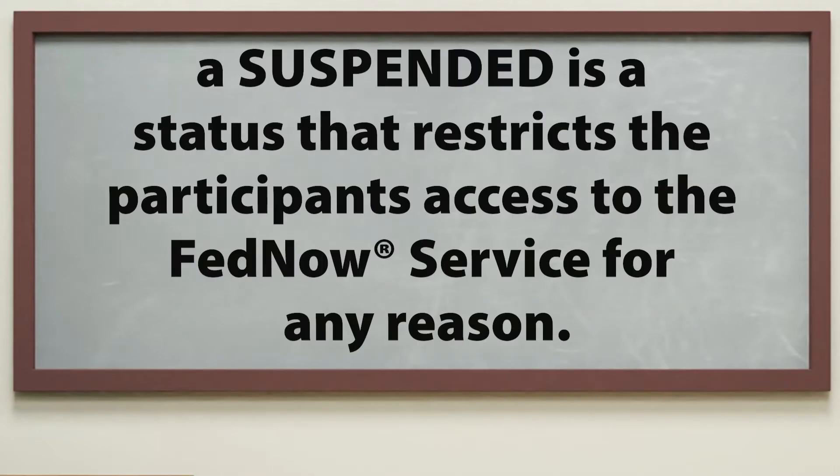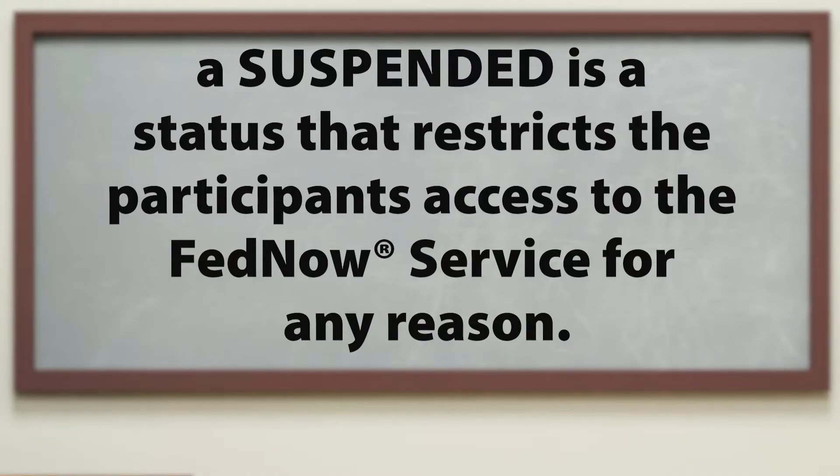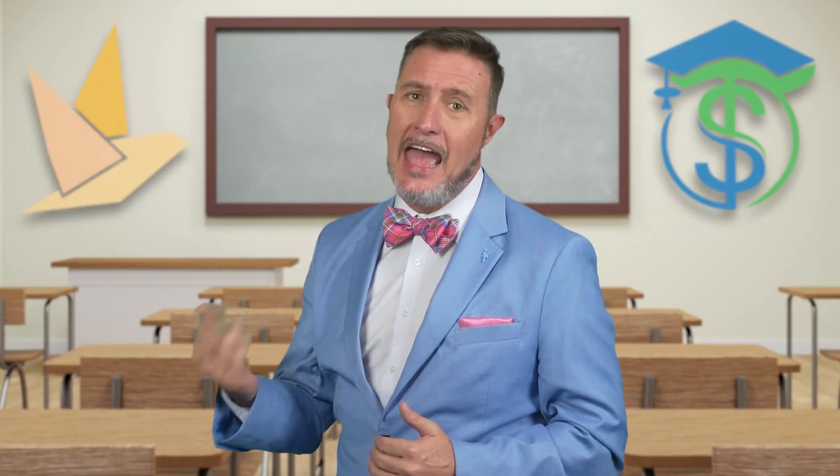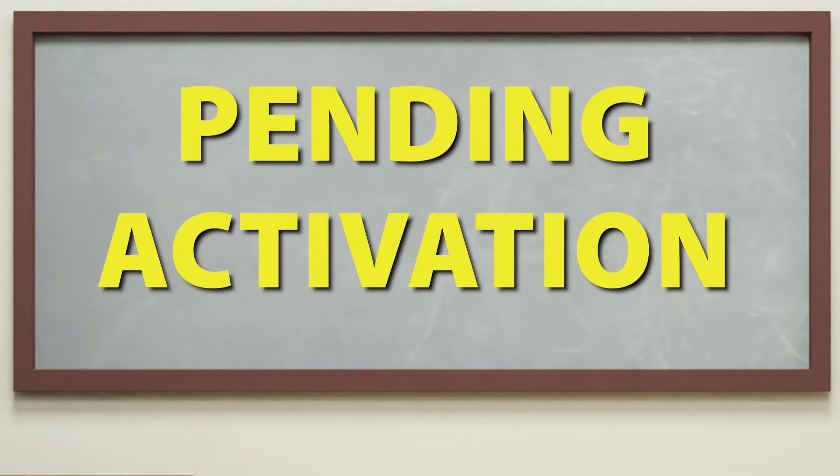A suspended status restricts a participant's access to the FedNow Service for any reason. Messages can't be sent or received and access to the FedNow interface is disabled. If you are set up for customer credit transfers — send and receive or receive only — you get signed off of the FedNow Service. When suspension is lifted, you will need to sign back onto the FedNow Service in order to start receiving payments again.